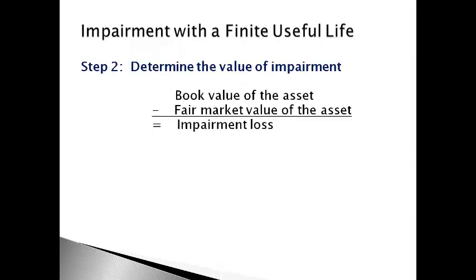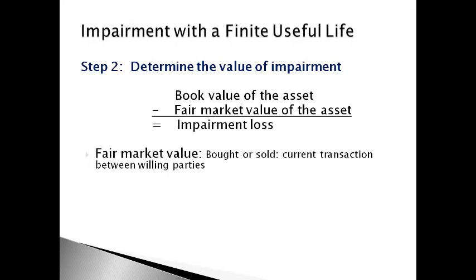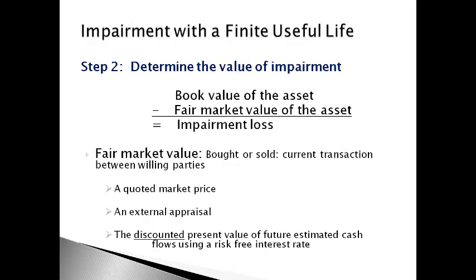If impairment is likely, the accountant must determine the value of the impairment. The impairment loss equals the asset's book value less the fair market value of the asset. Fair market value is the amount the asset could be bought or sold in a current transaction between willing parties, also defined as a quoted market price, an external appraisal, or the discounted present value of future estimated cash flows at a risk-free interest rate.